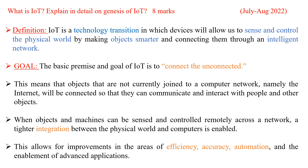The question is: what is IoT? Explain in detail the genesis of IoT, which is asked for 8 marks in the July-August 2022 question paper. Your question consists of two parts — what is IoT and explain in detail the genesis of IoT. What is IoT can carry two marks and the remaining six marks will go for the genesis of IoT.